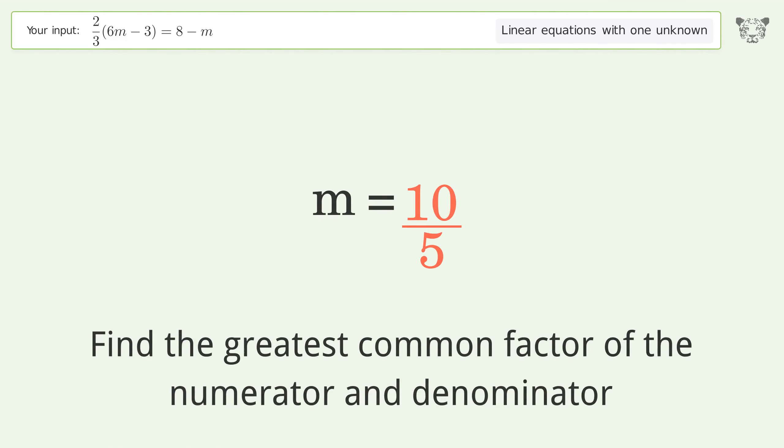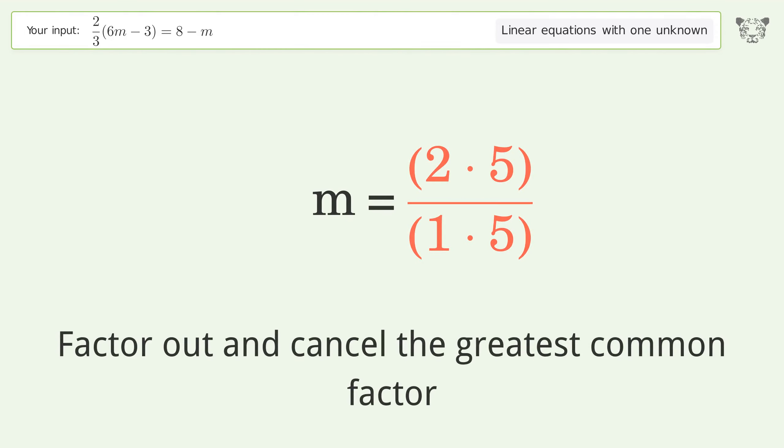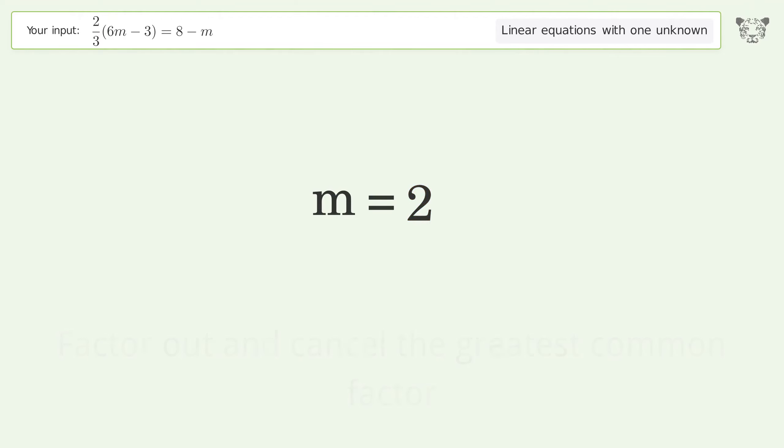Find the greatest common factor of the numerator and denominator. Factor out and cancel the greatest common factor. So the final result is m equals 2.